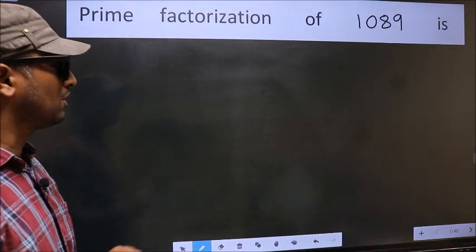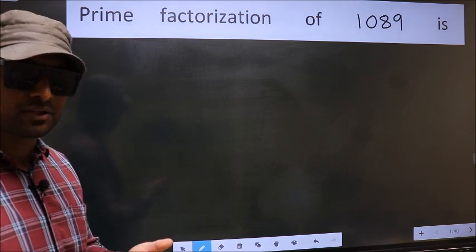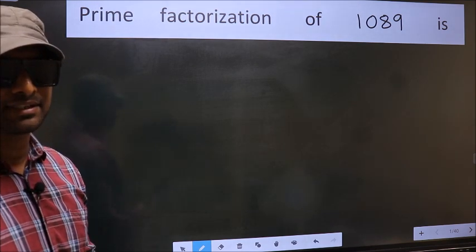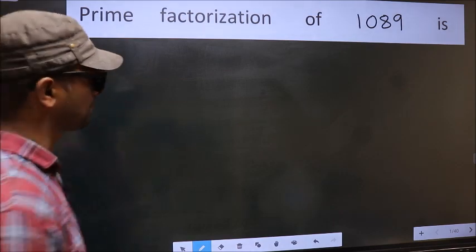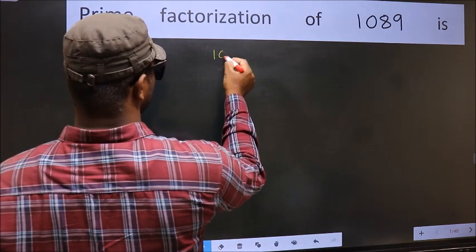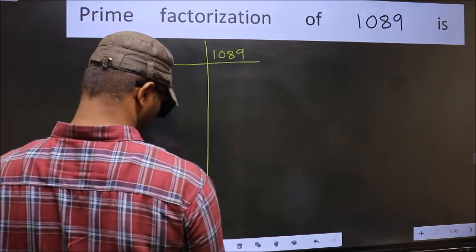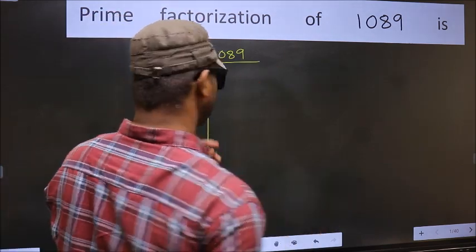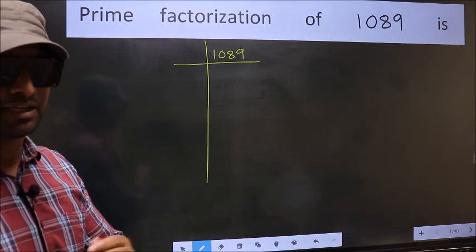Prime factorization of 1089. To do the prime factorization, first we should frame it in this way: 1089. This is your step 1.